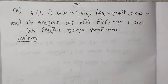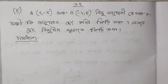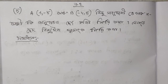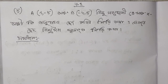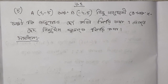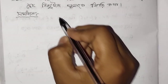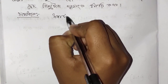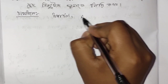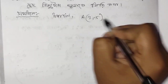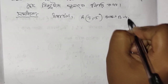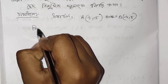Welcome. Today we are going to show a problem. We have point A(1, -5) and point B(-4, 5). We need to find where the line AB crosses the x-axis, using the section formula. Let A be (1, -5) and B be (-4, 5).